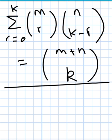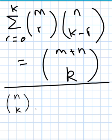Today we will prove a very important identity which is used in discrete probability distributions, especially the hypergeometric distribution, which we will cover in a future video. What we are going to prove is that the summation on the left-hand side: r is equal to zero to k of m-choose-r times n-choose-(k minus r), is equal to m+n choose k.